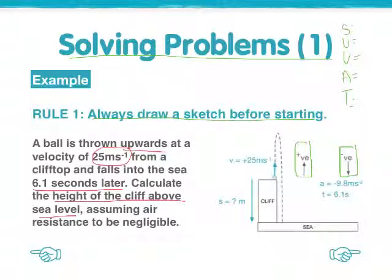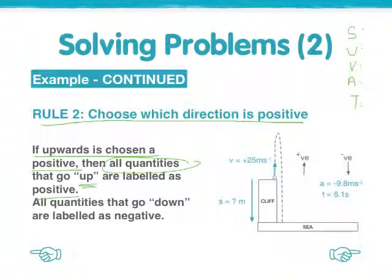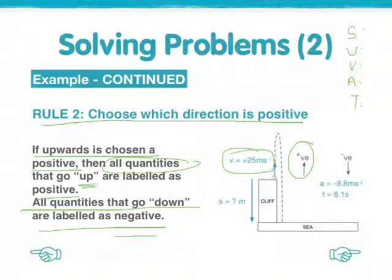Now the fact that air resistance is negligible means that acceleration is constant. We haven't finished with acceleration yet. The next thing you have to do is choose which direction is positive. If upwards is considered a positive, then all quantities that go up are labelled positive. All quantities that go down are then labelled negative. That means that if your acceleration is considered positive at the beginning, the velocity in that direction will also be positive. And anything coming down would then be considered a minus value.